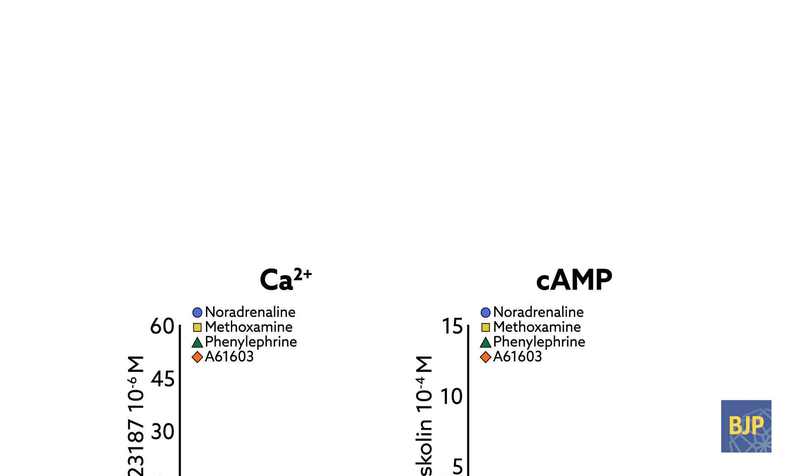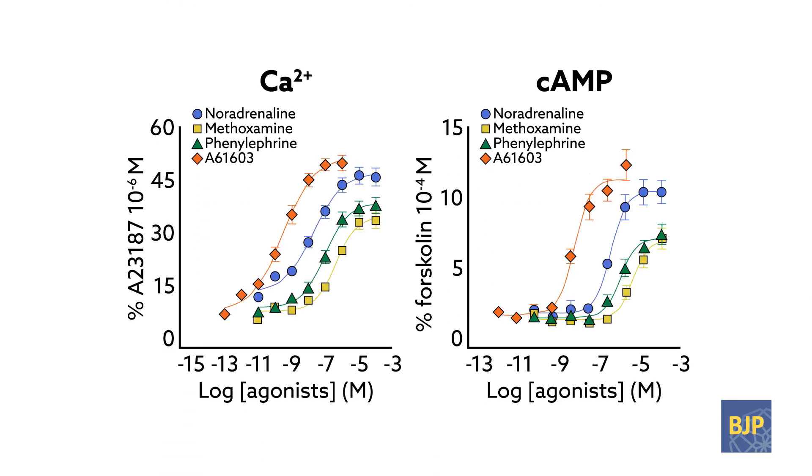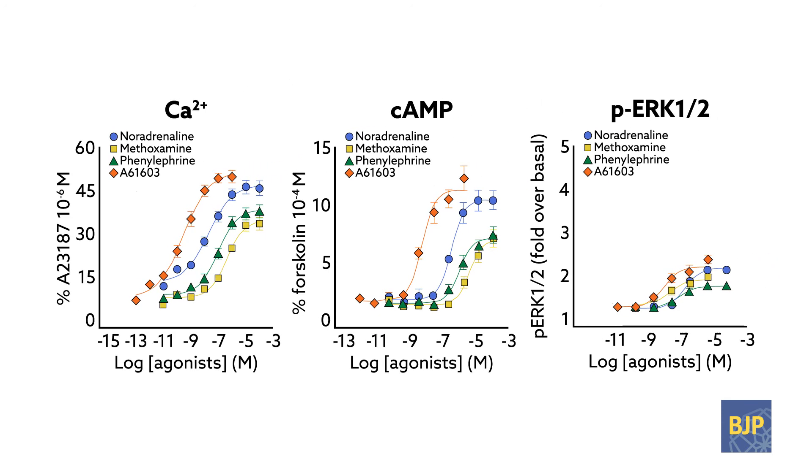Four of the drugs produced similar effects on a common cell line expressing alpha-1a receptors. They increased levels of calcium and cyclic AMP, important signaling molecules, and moderately activated the proteins ERK1 and ERK2, which regulate many cellular processes. But the drug oxymetazoline produced a different effect.